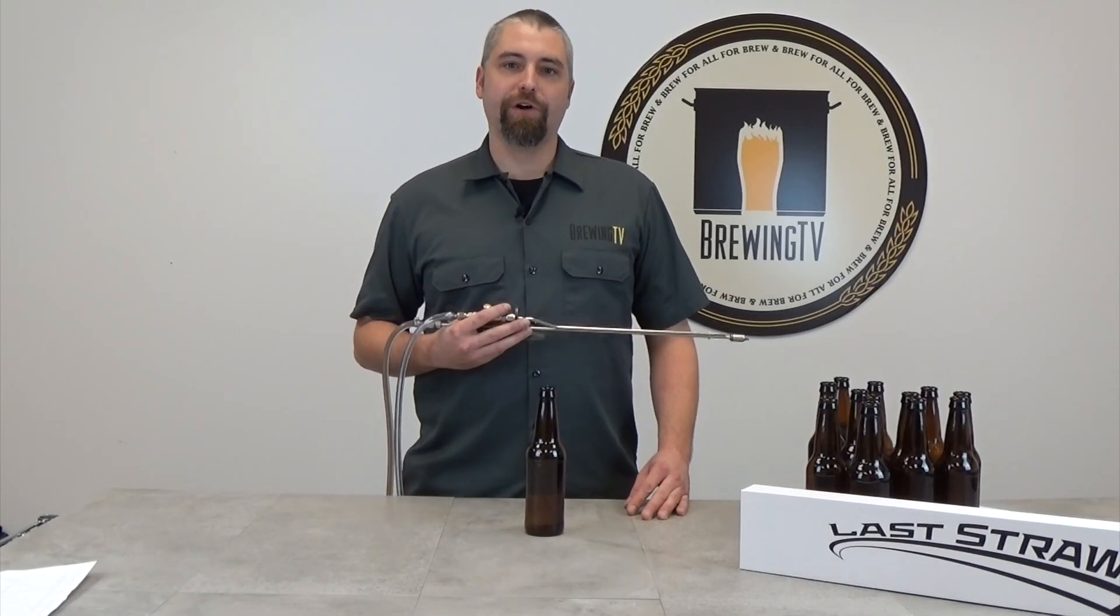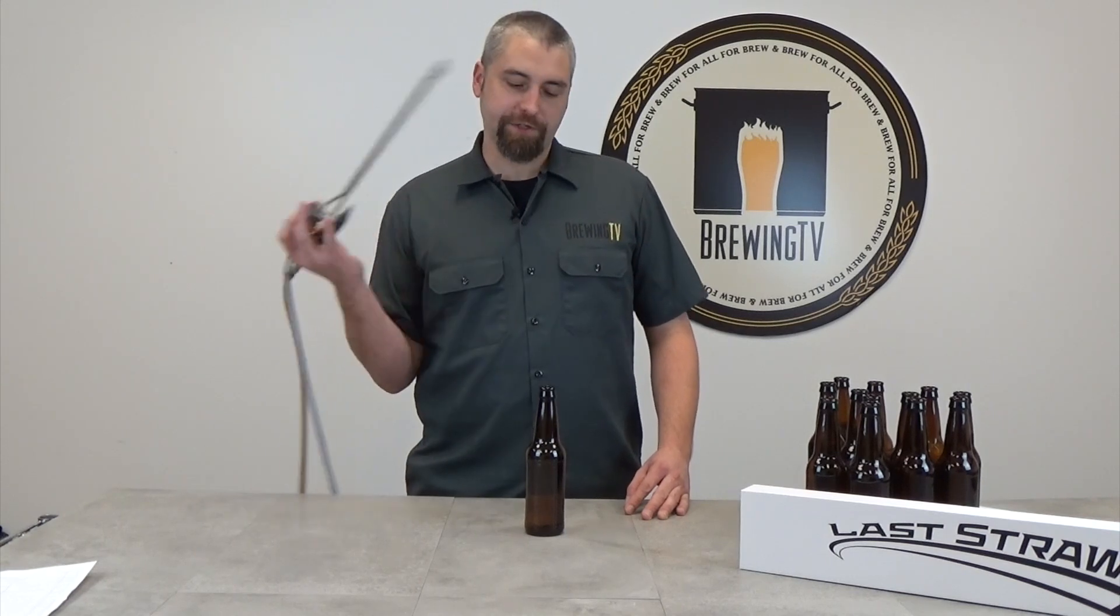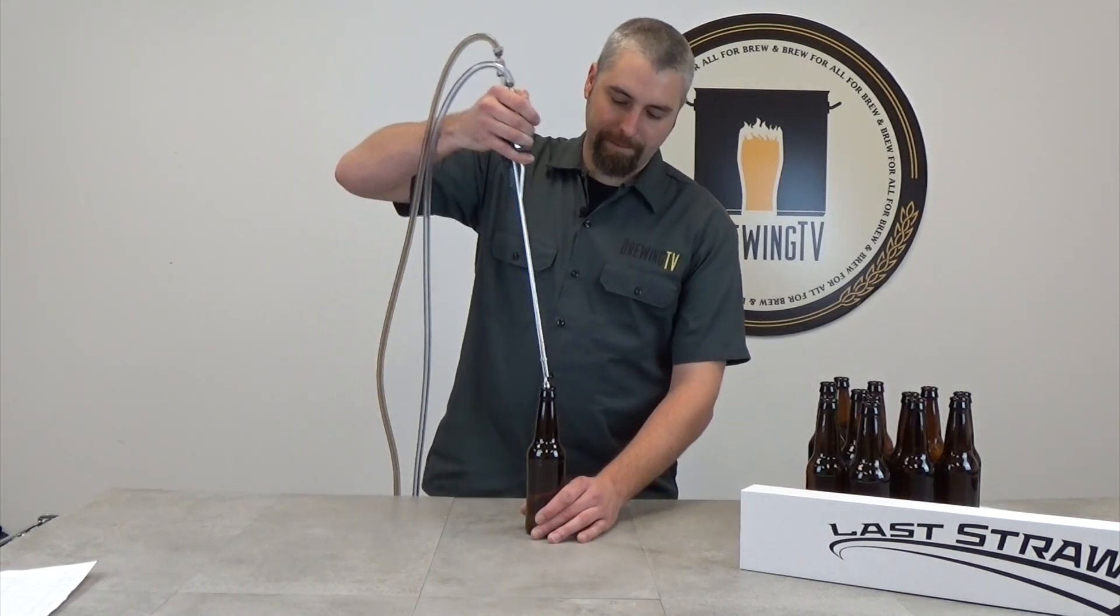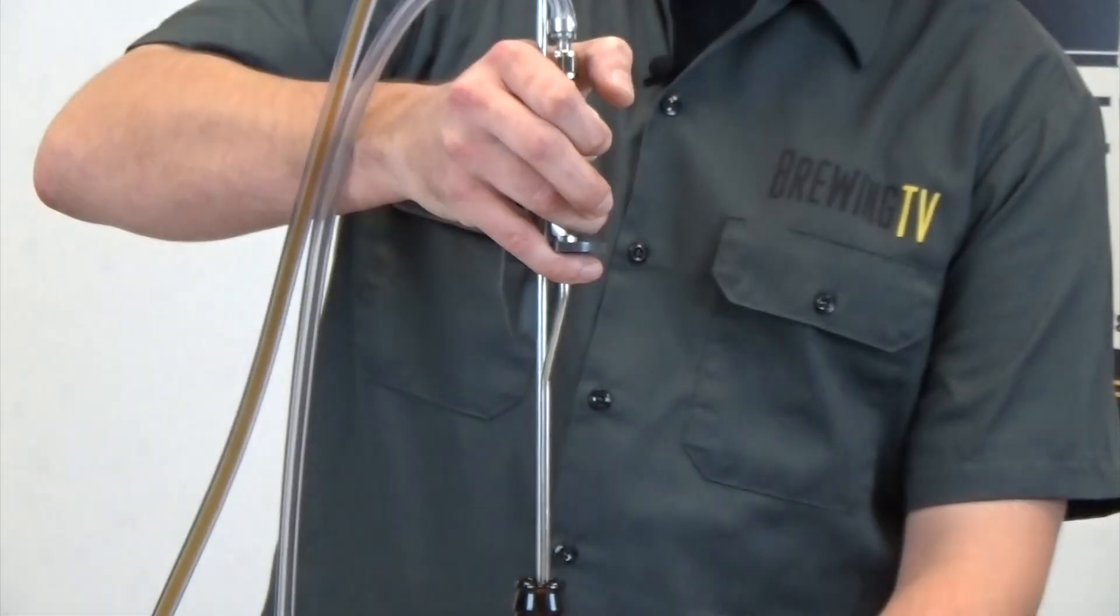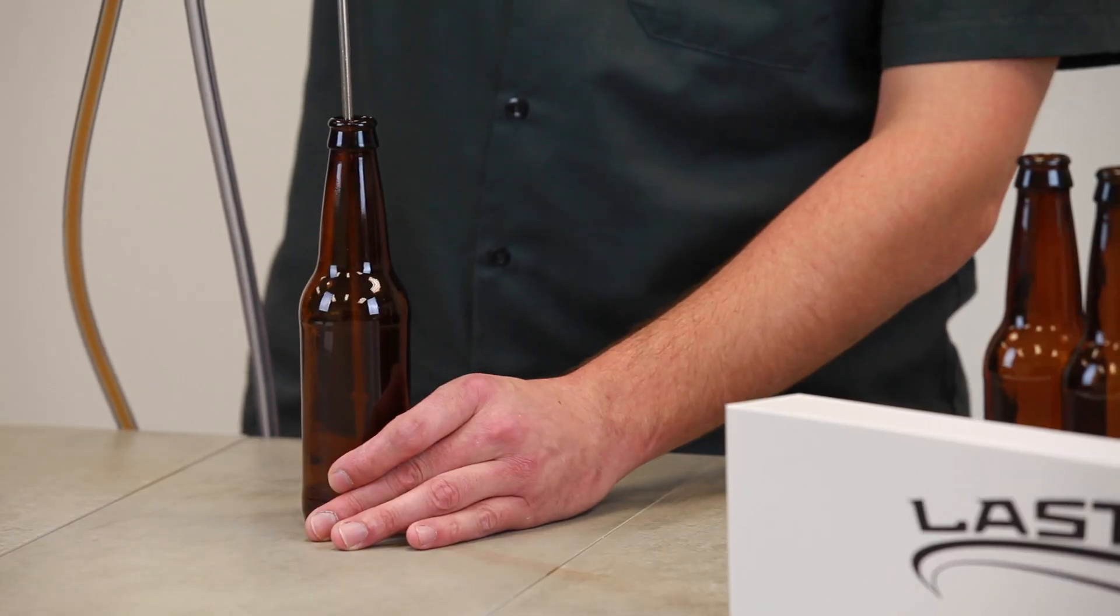Well, I bet you're ready to see how the Laststraw works. It's pretty simple actually. Insert it into the bottle, depress the CO2 button to purge the oxygen out, and simply press the filler down on the bottom of the bottle.